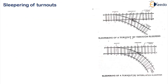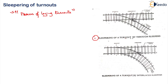Moving ahead — sleepering of turnouts. Sleepering of turnouts is nothing but the process of laying of turnouts, or the process of laying sleepers. Turnouts can be laid in two ways: the first is sleepering of turnouts by through sleepers, and the second is by interlaced sleepers. Through sleepers are what you observe at the junction portion — for both the main line and the branch line, there are sleepers which run through and through, coming under both your main line as well as your branch line.